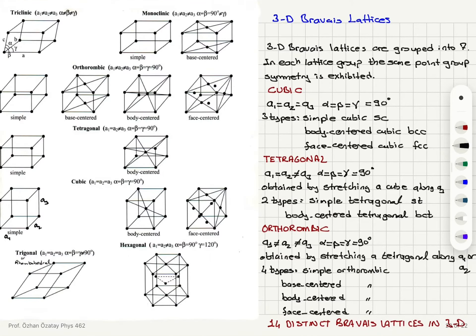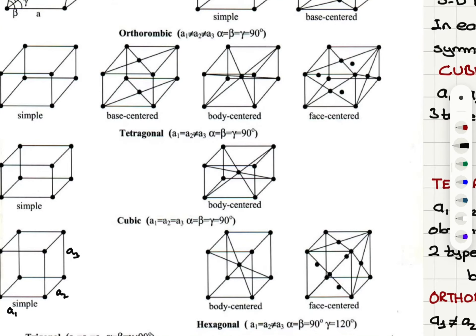Next we have tetragonal structure. Tetragonal structure is obtained by stretching a cube along a3. There are two types: simple tetragonal and body-centered tetragonal. Here, a1 equals a2 but not equal to a3.